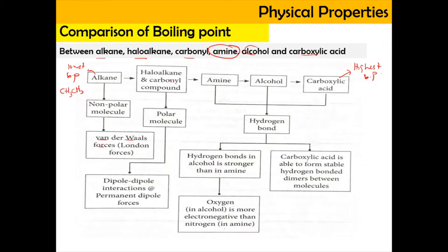Haloalkane has a higher boiling point than alkane because haloalkane consists of polar bonds — for example, C–Br — where bromine is more electronegative than carbon, creating a polar bond. The same applies to the carbonyl group, which has different electronegativity between oxygen and carbon, making it a polar bond. When molecules are polar, they have dipole-dipole interactions — permanent dipole forces — which are much stronger than London dispersion forces.